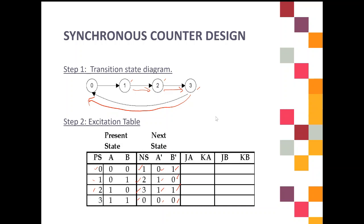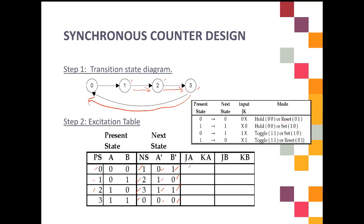For input J and K, you must remember the previous explanation about the J and K excitation table. You need to compare between present state and next state value. Because we have two variables A and B, you compare for JA and KA between present state A and next state A. For JB and KB, you compare between present state B and next state B. Then you match with the input J and K — whether it's 0X, X0, 1X, or X1.